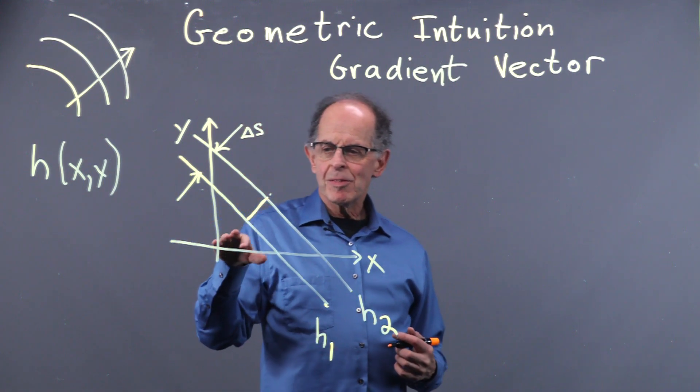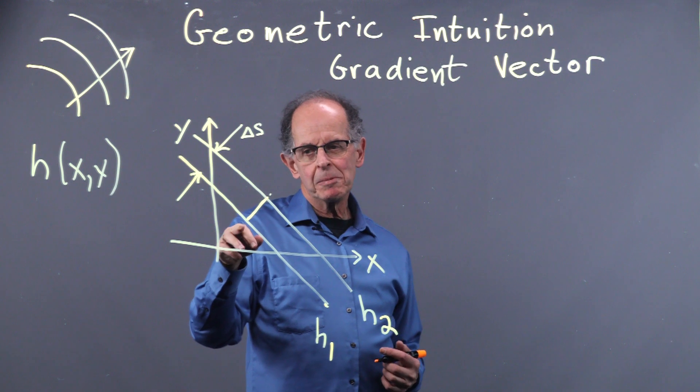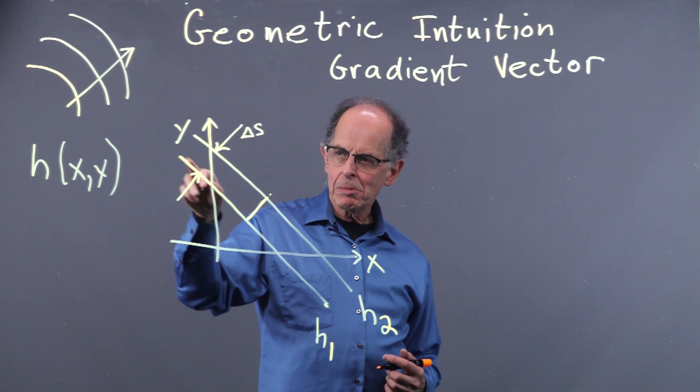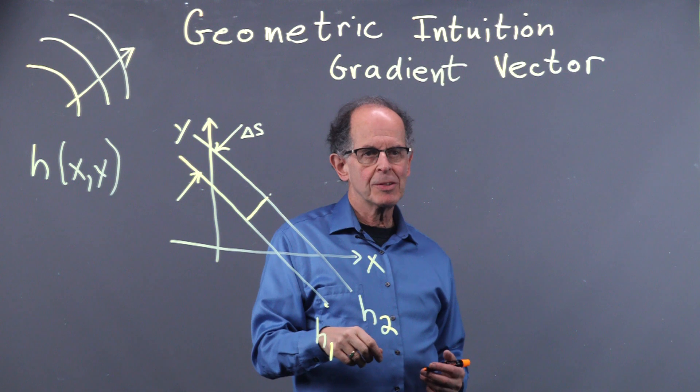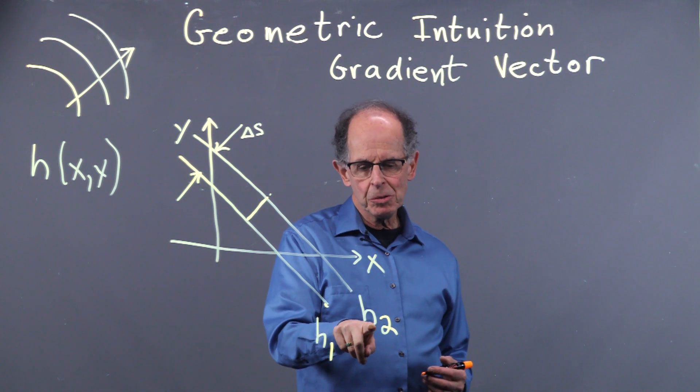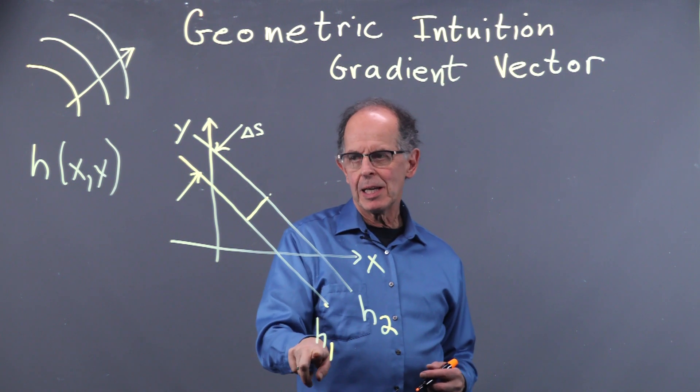Now, the rate at which I'm climbing the fastest is going to be normal to the two contour lines that I've got here. So H2 is bigger than H1.